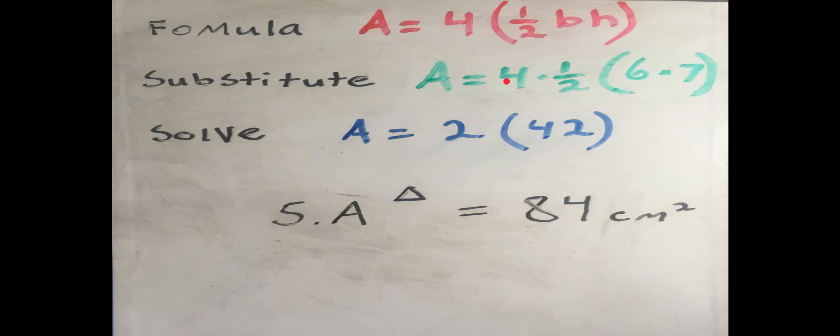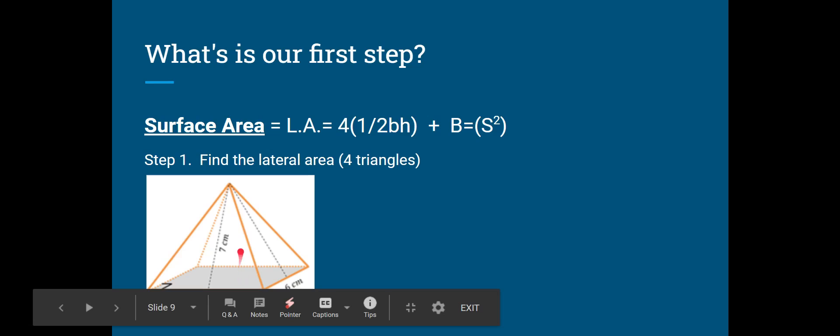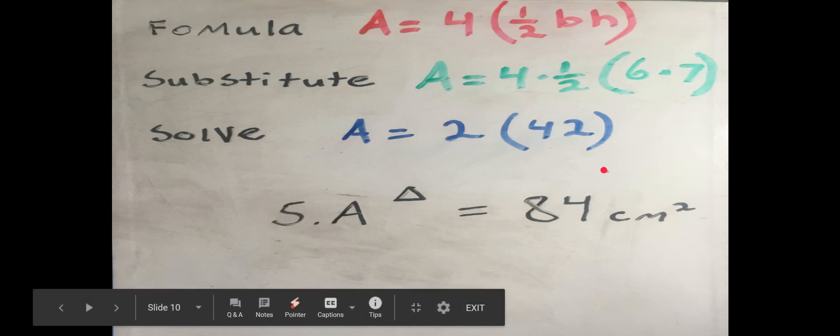Then, second step would be to substitute, as always. Remember our steps here: F, S, S. We'll substitute, then we'll get four times the half would give us two. Six times seven would give us 42, and I got six times seven from here: base times height, six and seven. Six times seven is 42. Two times 42 is 84. So, surface area for our triangles, for the four triangles, would be 84 centimeters squared. We're not done yet.